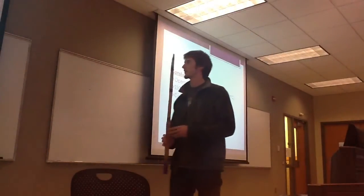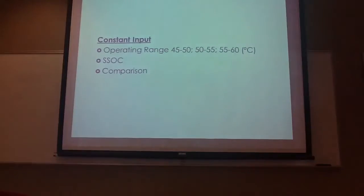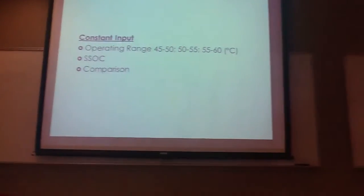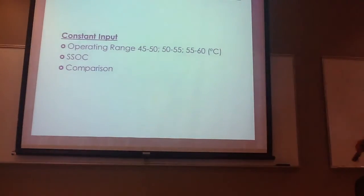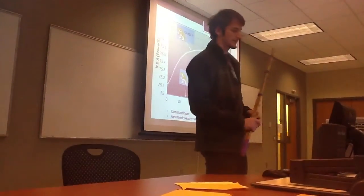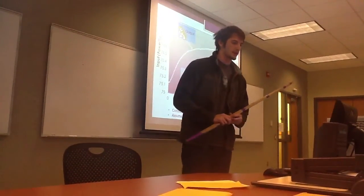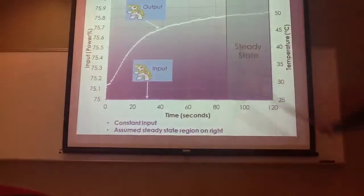For the constants, we have the 45 to 50, the 55 to 60, and those are the outputs we're trying to receive by putting our inputs in, and then we're going to go over the SSOC and the comparison. So here's just an example of our steady state, and this is the region right here in which we consider steady.